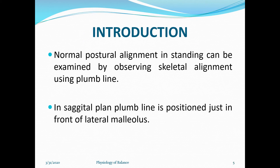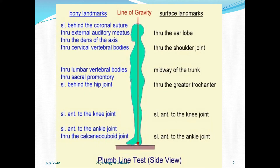Normal postural alignment in standing can be examined by observing skeletal alignment using a plumb line. A plumb line is a hypothetical line passing through the center of gravity which is maintained within the base of support. In the sagittal plane, the plumb line is positioned just in front of the lateral malleolus. So let's see the plumb line and its surface landmarks.